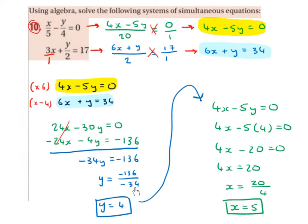I'm going to substitute y equals 4 into one of my equations. I've got 4x minus 5y equals 0. I swap the y for 4 with brackets around it. Minus 5 by 4 is minus 20. I bring the minus 20 over the other side, it becomes plus 20. 20 divided by 4 is 5, so x equals 5.